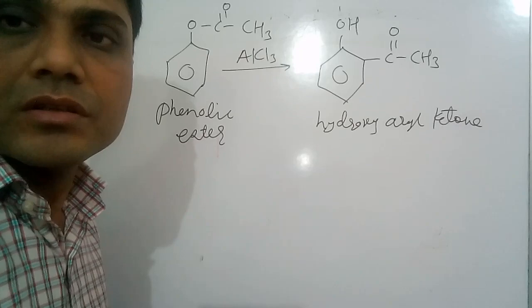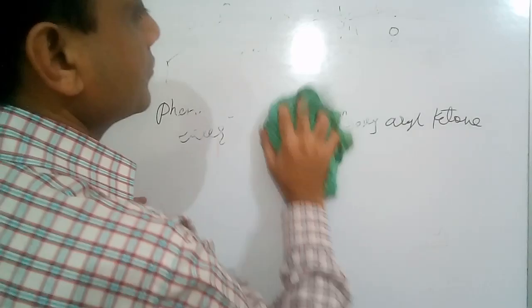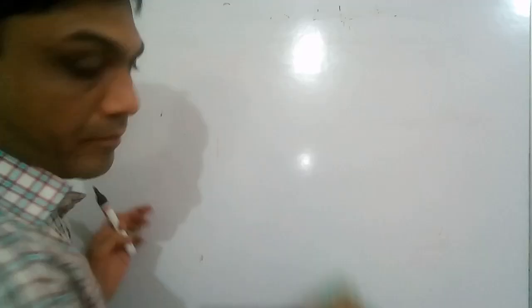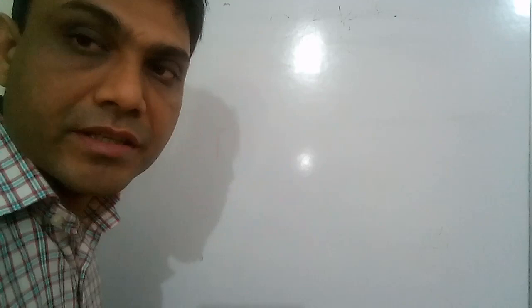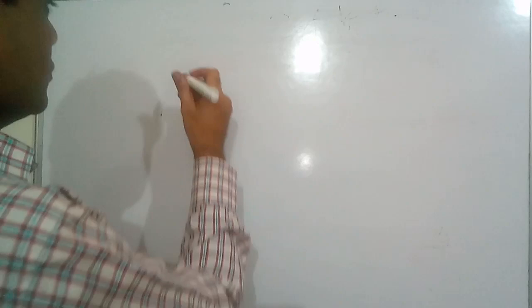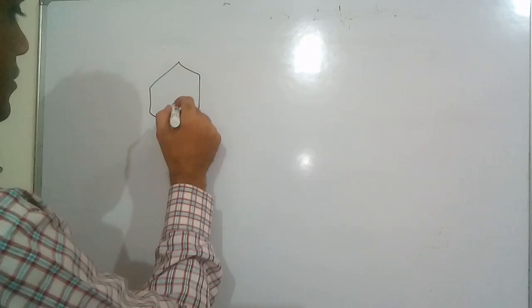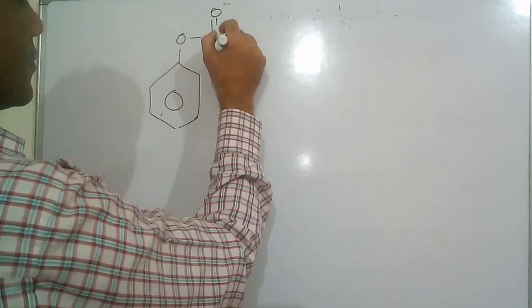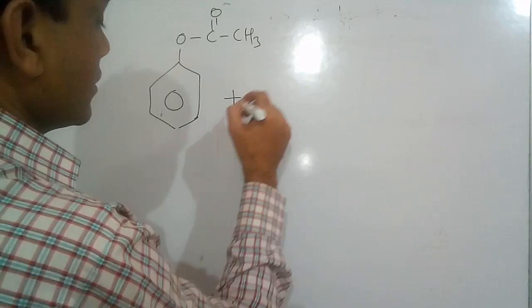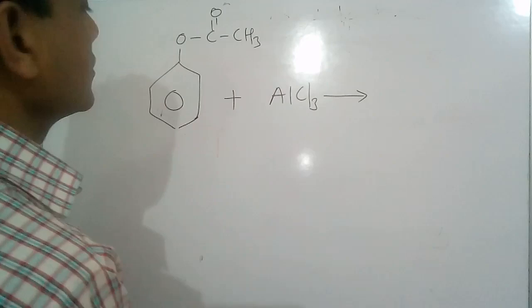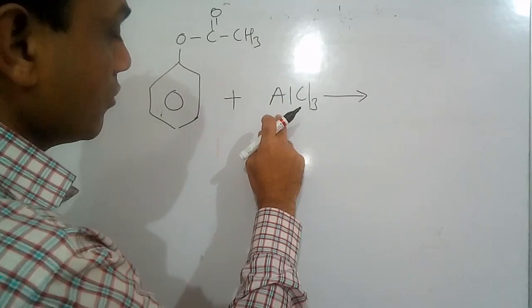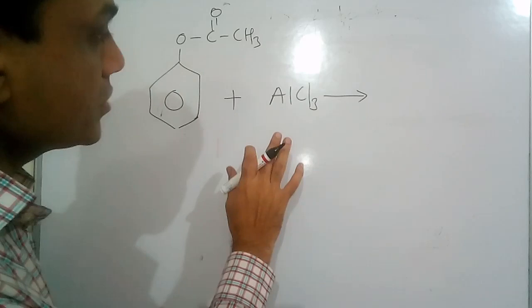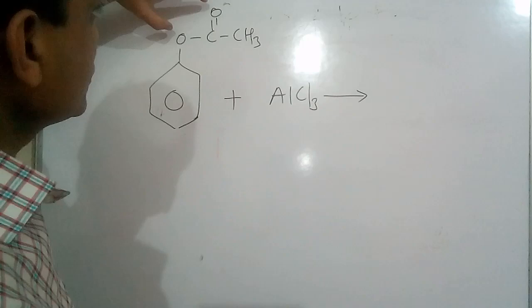Now we will see the mechanism of this reaction. The first step of the mechanism is the attack of Lewis acid. We will draw the phenolic ester here. The first step is the attack of Lewis acid on the phenolic ester. Now, this Lewis acid has two possible electron donor groups.